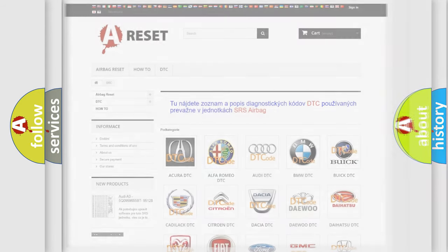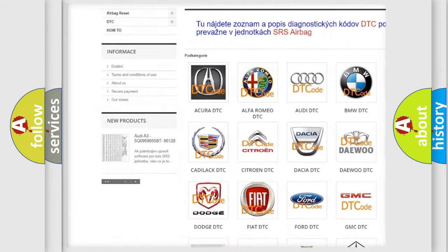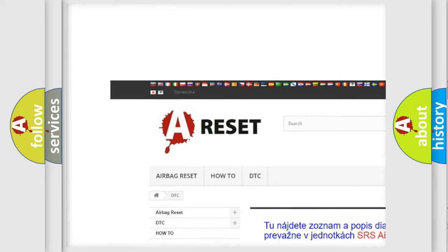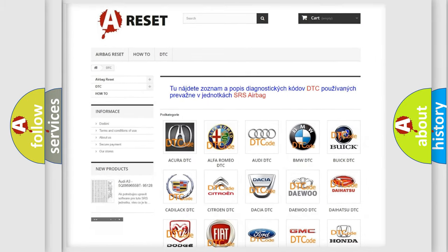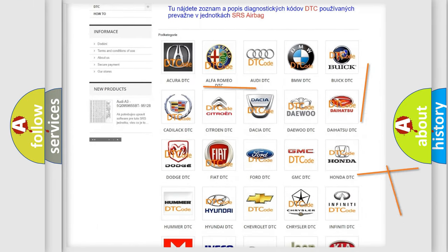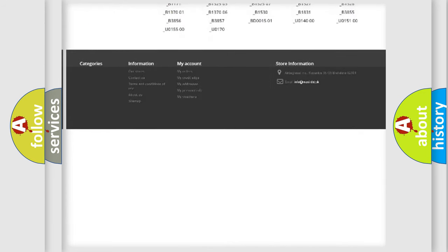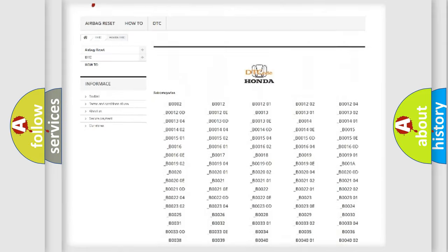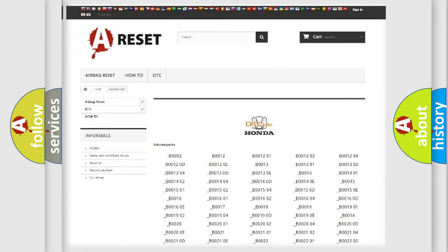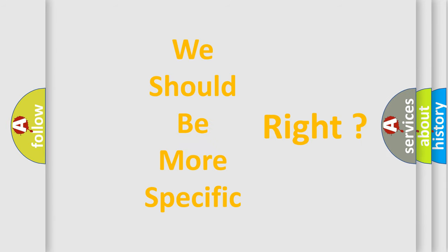Our website airbagreset.sk produces useful videos for you. You do not have to go through the OBD2 protocol anymore to know how to troubleshoot any car breakdown. You will find all the diagnostic codes that can be diagnosed in Honda vehicles, and many other useful things. The following demonstration will help you look into the world of software for car control units.